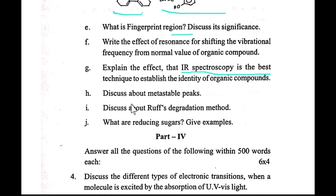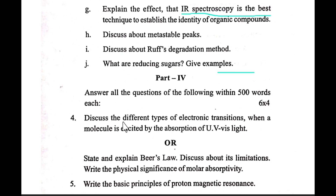Discuss the best technique to establish the identity of an organic compound. Discuss about metastable peaks. Discuss the degradation method. What are reducing sugars? Give examples. Number four: Discuss the different types of electronic transitions when a molecule is excited by the absorption of UV-visible light.